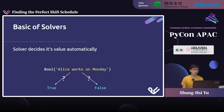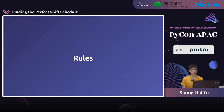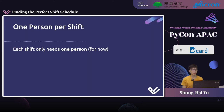Before we feed this into the solver, there's something we need to do first: we need to teach it how the world works. Otherwise the solver will return something that doesn't make sense. In other words, we need to teach it rules. Some rules can be rather complicated, so let's start with a basic but important one: only one person is working per shift.